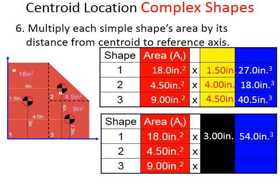Doing the same thing for the y components, we get for shape one 54 cubic inches, that's the product of 18 times 3. The product of 4.5 times 4 for the triangle is 18 cubic inches, and finally for the square we get 9 times 1.5, which is 13.5 cubic inches. So now we've calculated the numerator for the x and the y formula.